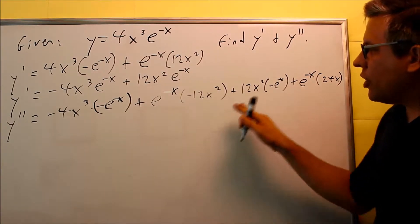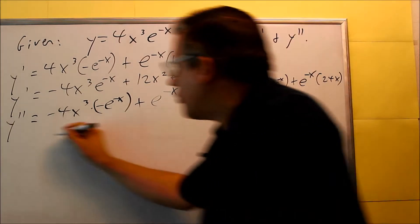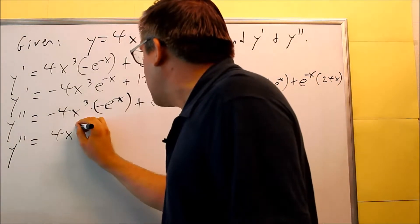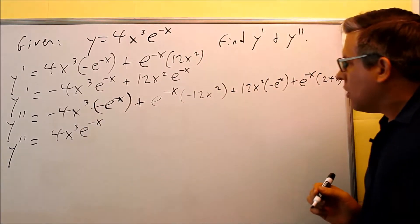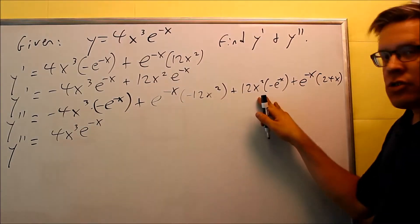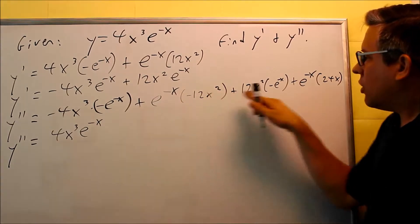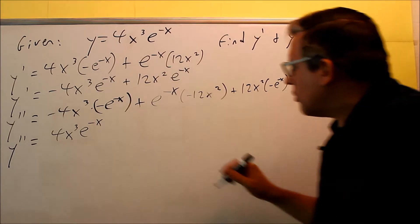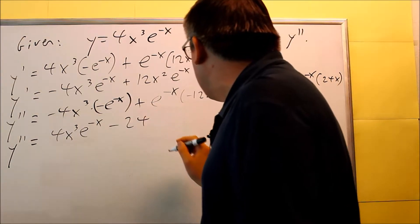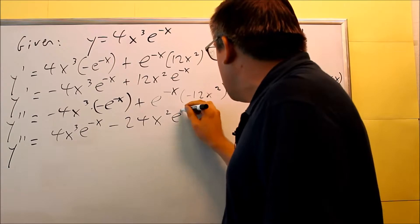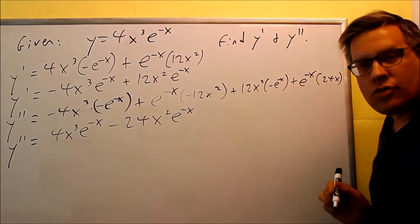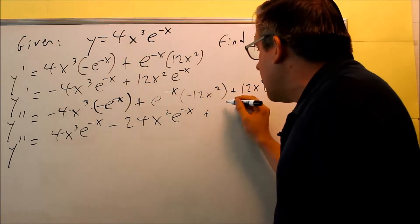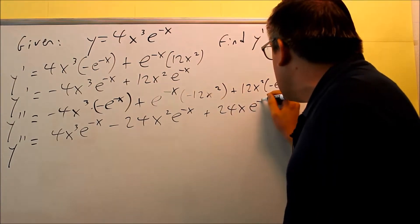So now, at this point, we need to clean this up and do some simplifying. So this first term, we'll get positive 4x³e^(-x). And then, these are like terms actually. I have a -12x²e^(-x), and another -12x²e^(-x). So, I can write that as -24x²e^(-x). That takes care of both of these. They're like terms. That's why I'm allowed to combine those together. The last one is 24x and then e^(-x).